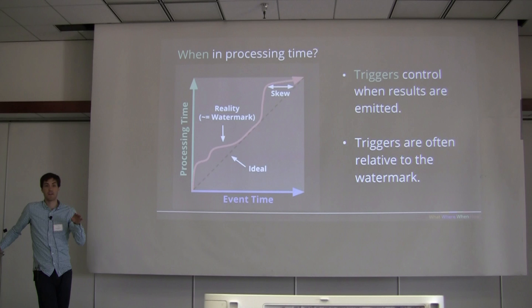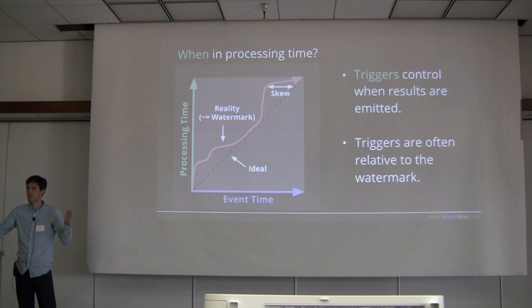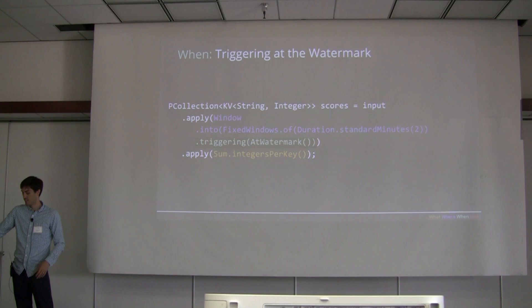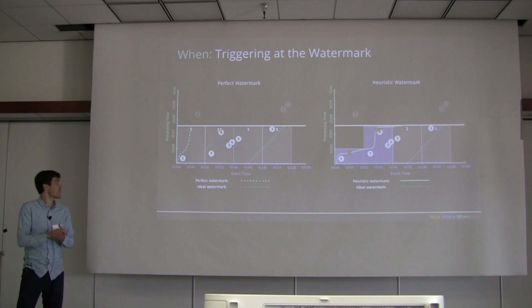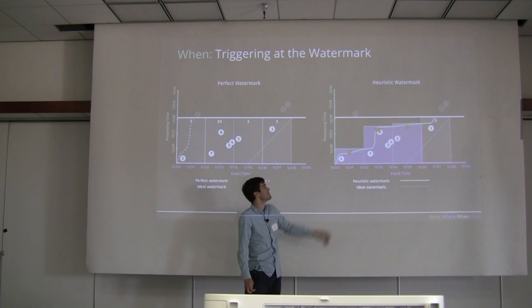If we want to consider events as they arrive, we have to make a decision about what's late and what's not late — we're back to our watermark. A trigger controls when a window is executed and you get results; triggers move with watermarks. I've added a trigger to the two-minute windows: whenever you see a watermark, trigger the window and do the aggregation, which in this case is the sum of integers. If I can calculate a perfect watermark I'd know when data is going to be late, but since I can't, I might miss number nine — it came late and I missed it.